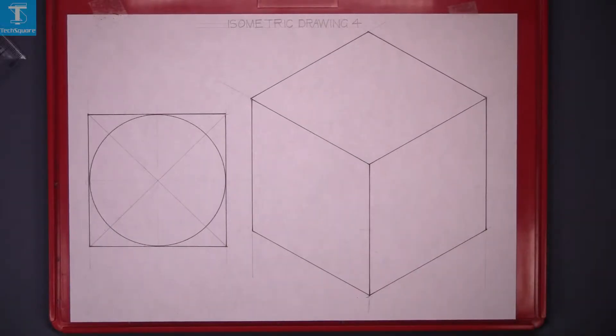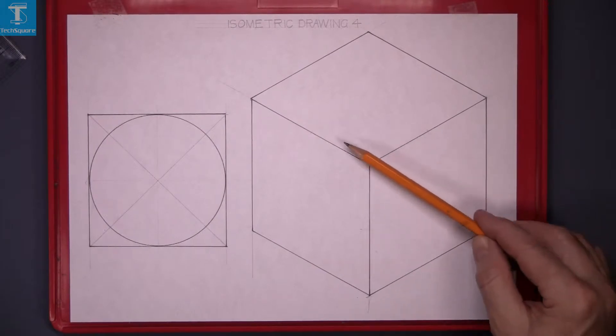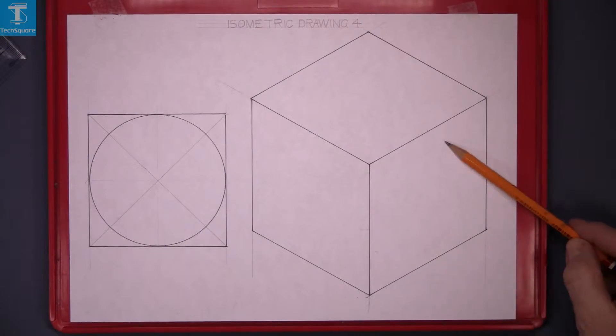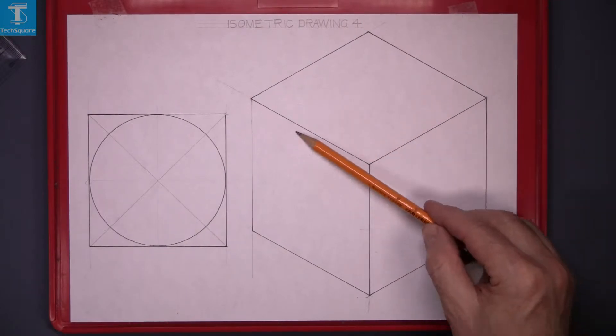Isometric drawing 4. Given the isometric drawing of a cube, we are asked to fit a circle into each of these quadrilaterals.